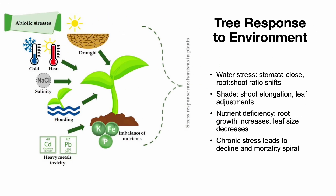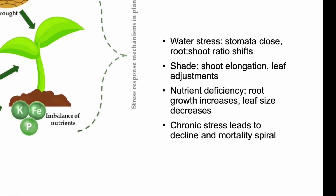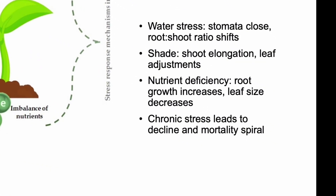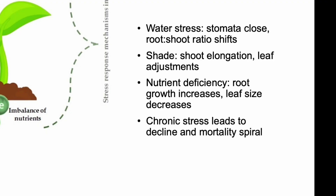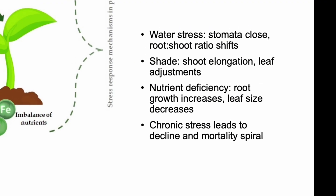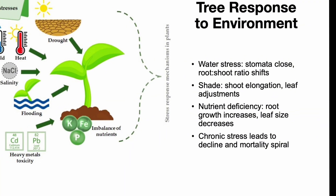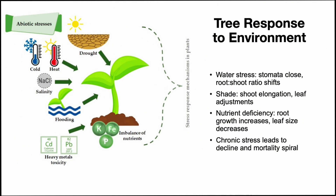Trees are adaptable. They adjust leaf size, root growth, and even their energy allocation to deal with stress. Low water — they grow more roots. Not enough light — they stretch their shoots. Low nitrogen — they grow thicker leaves. But too much or repeated stress can cause decline, and once that spiral starts, recovery becomes much harder.